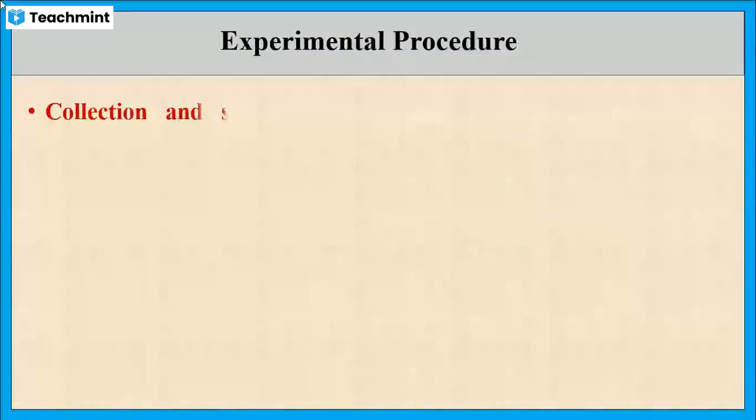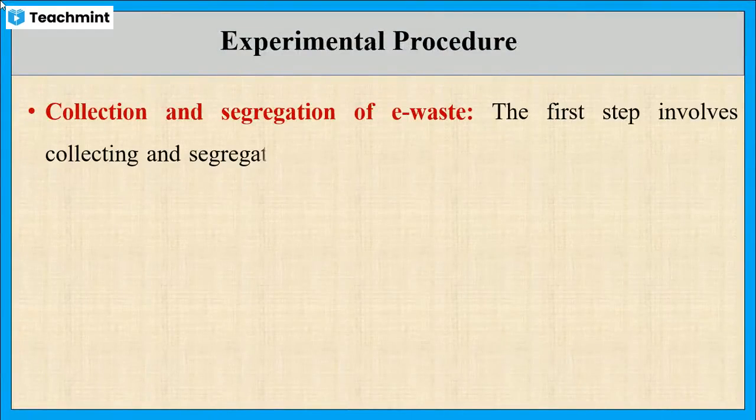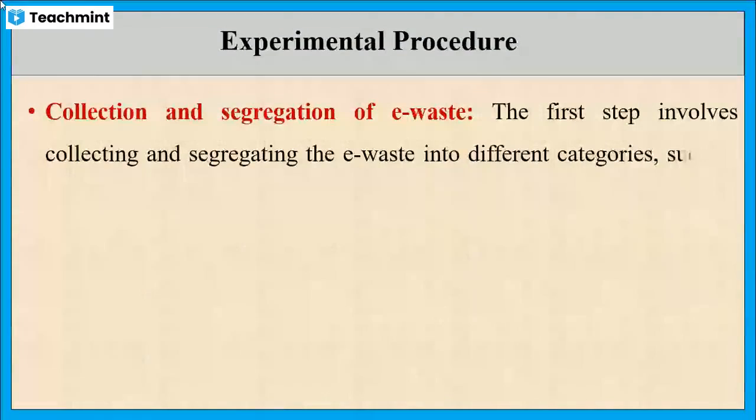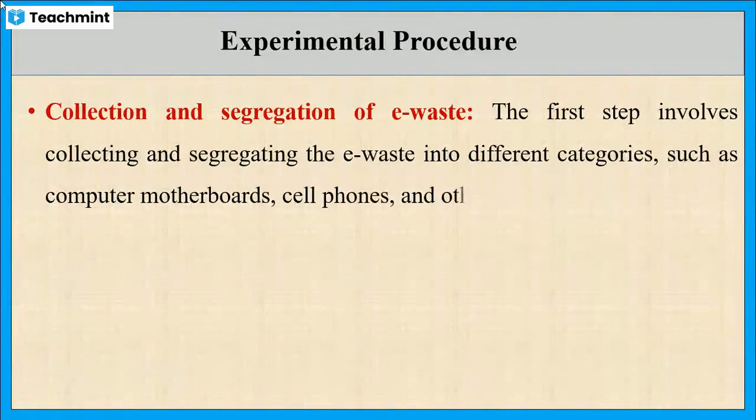Now, let us see the experimental procedure. The first step is collection and segregation of e-waste. Here, we collect and segregate the e-waste into different parts such as computer motherboards, cell phones, and so on.